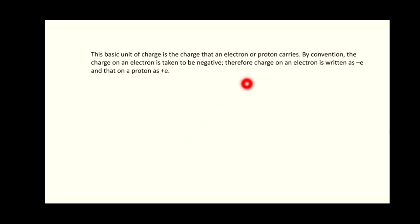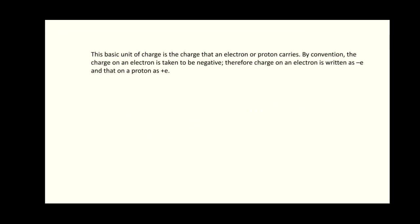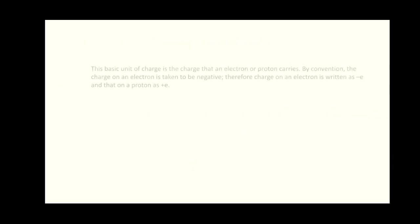As you know, an electron is a negatively charged particle, so the charge of an electron is denoted by minus e. And a proton is a positively charged particle, so its charge is denoted by plus e. The fact that electric charge is always an integral multiple of e is called quantization of charge. If there is a transfer of 100 electrons from one body to another, then the total charge that reached the body is Q = 100 × e.